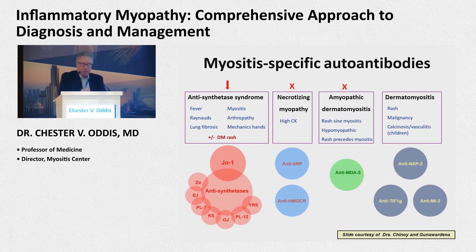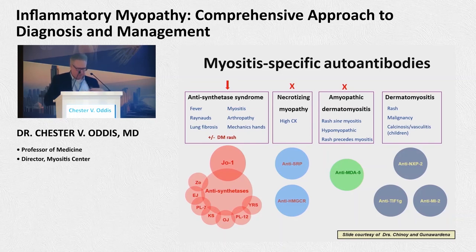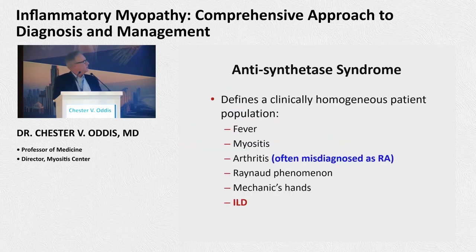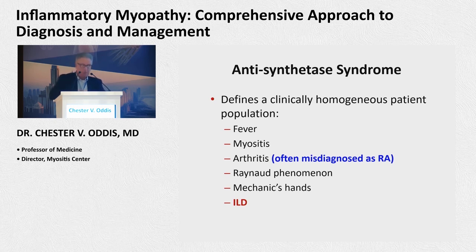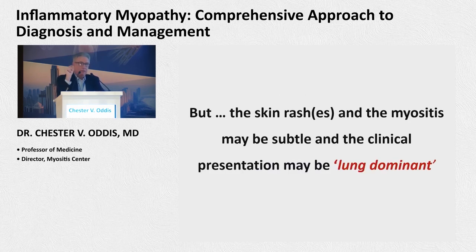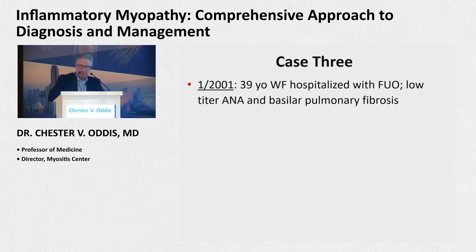Everybody knows about the antisynthetase syndrome, but sometimes there's a little more to it. These patients are systemically ill and many times their cutaneous features look like RA. The skin rashes and myositis may be subtle, and the real clinical problem is lung-dominant disease with the antisynthetase syndrome.